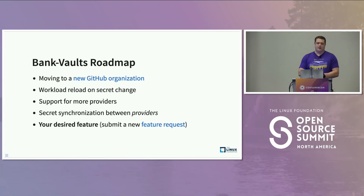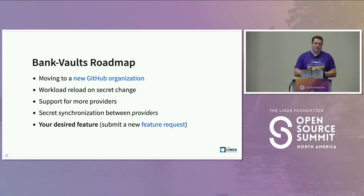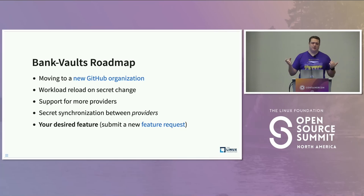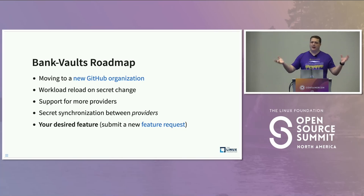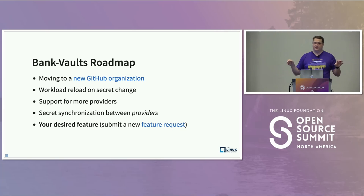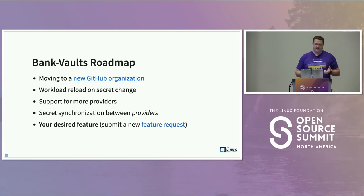A couple of things about Bank Vaults: we are trying to revive the community around it and moving it to a new GitHub organization, so if anyone wants to contribute it's going to be way easier. We are going to work on the workload reload feature — detect secret changes and trigger workload rollouts on secret changes. We also plan to support more providers — currently we only support HashiCorp Vault, but secret injection can work with any kind of secret store. We are also planning to add secret synchronization to the Bank Vaults suite, giving you tools to run a cluster-local Vault instance more easily. If you have any feature requests or are interested in Bank Vaults, please just talk to us.